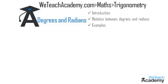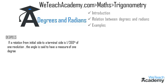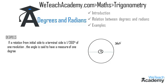Let me define degree. If a rotation from the initial side to the terminal side is 1/360th of one revolution, then the angle is said to have a measure of 1 degree. This can be explained with a diagram — here we have a circle with center O which completes one revolution, so the angle made will be equal to 360 degrees, that is a complete angle.